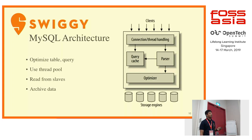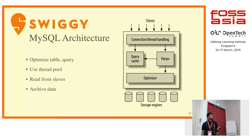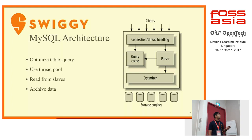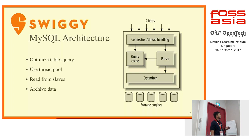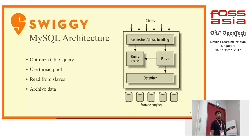You can optimize MySQL in a few ways depending on the requirement: use optimized queries, keep optimizing your tables at suitable intervals, use thread pools so that connection creation time reduces, write into master and read from slaves, divide your data according to use cases so that one slave doesn't get all the requests. And if data is old and not being used, archive it from MySQL to archival storage so that data size stays small and queries are faster.